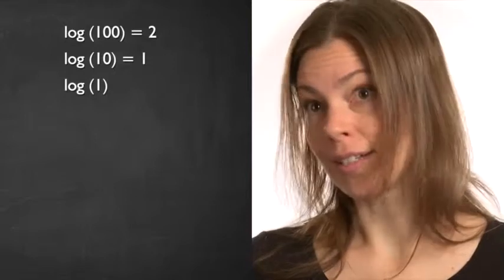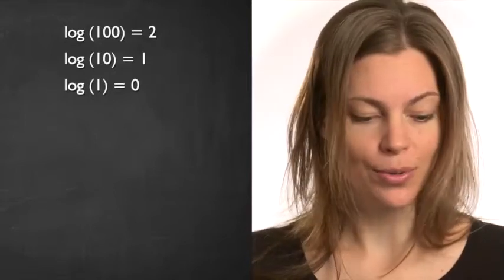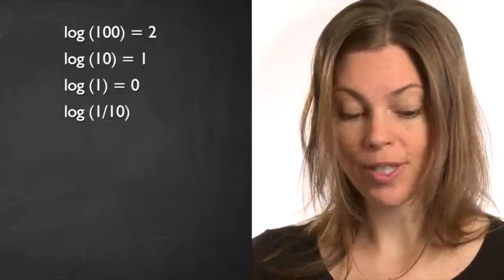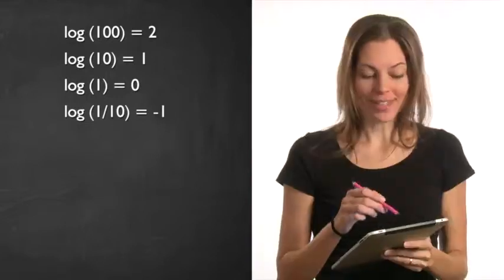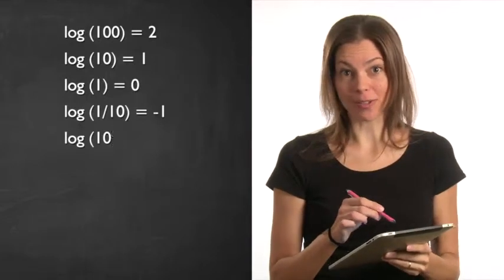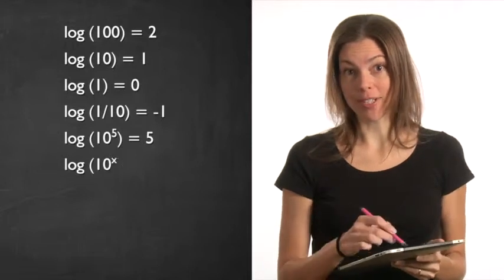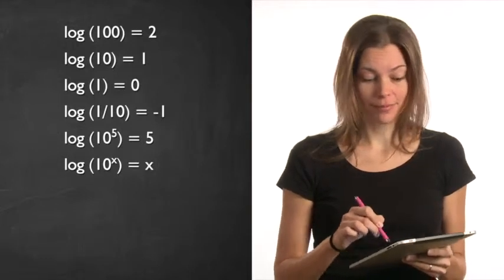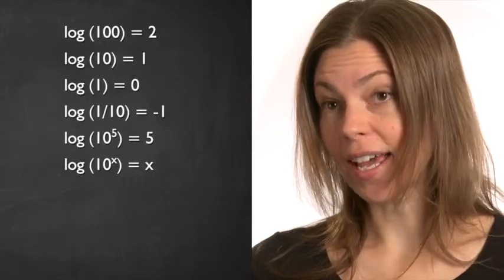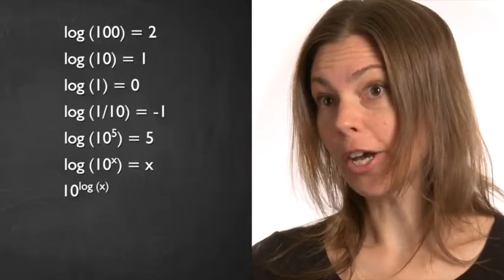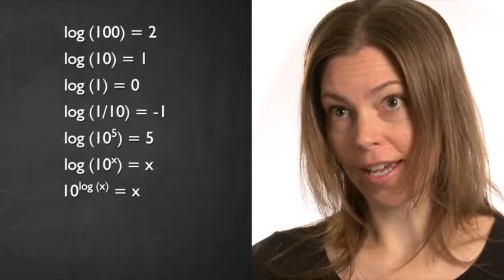The logarithm of 1 is 0 because there are no zeros. The logarithm of 1 over 10 is minus 1. The logarithm of 10 to the fifth is 5. Basically the logarithm of 10 to the x is x. Similarly, 10 to the power of the logarithm of x is x.